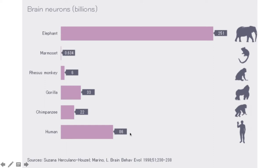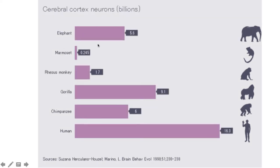To assess intelligence, you have to measure the number of neurons in the cerebral cortex itself. In the cerebral cortex, the elephant has only 5.6 billion neurons, gorillas have about 9.1 billion neurons, and human beings have about 16.3 billion neurons. It is this high presence of neurons in the cerebral cortex — the highest among these species — that actually signifies the intelligence in the system.